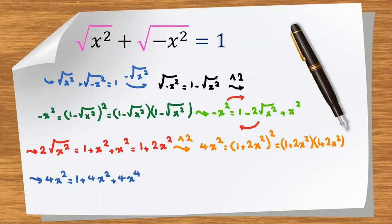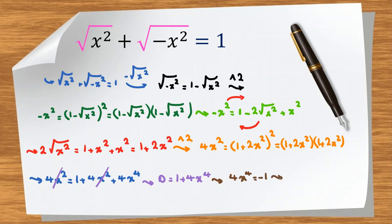We take all terms to the right-hand side. Subtracting 4x squared from both sides, we reach 0 equals 1 plus 4x to the 4th. Rearranging, 4x to the 4th equals negative 1, so x to the 4th equals negative 1 over 4.